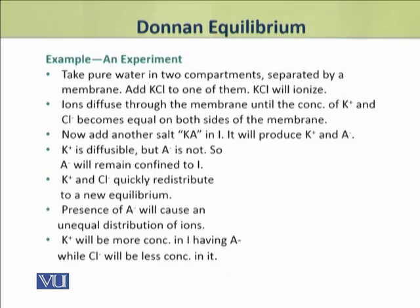To explain Donnan equilibrium, we shall take an example of an experiment in which we take pure water in two compartments separated by a membrane, and add potassium chloride to one of them. Potassium chloride ionizes into potassium and chloride ions.